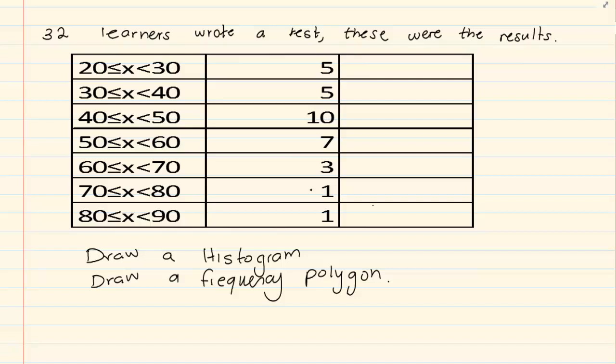These were the results. Between 20 and 30 there were 5 learners, between 30 and 40 there were 5 learners, 40 to 50 there were 10 learners, 50 to 60, 7 learners, 60 to 70, 3 learners, 70 to 80, 1 learner, 80 to 90, 1 learner.